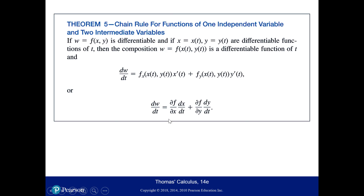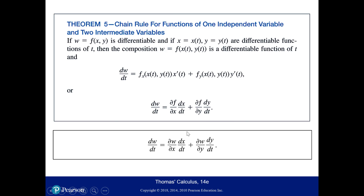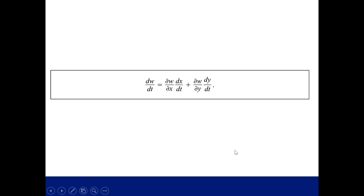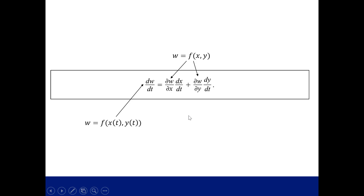We have two different notations for writing this chain rule, and there's actually a third one. We can replace the partial derivative with respect to x written as the partial derivative of f, and write it instead as the partial derivative of w with respect to x — same thing for y. When we do this, w means two different things on each side of the equation: on the left, w is the composite function with independent variable t; on the right, w is just a function of x and y.